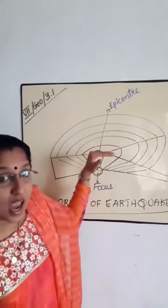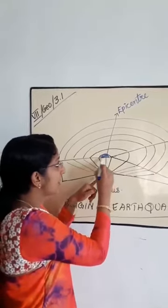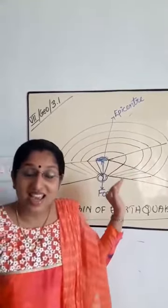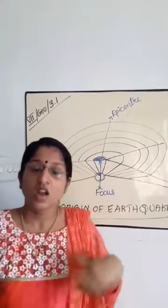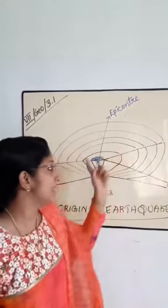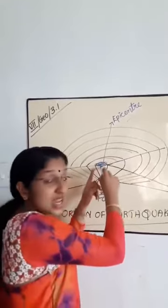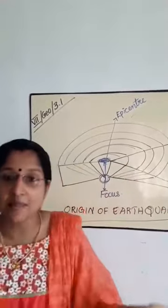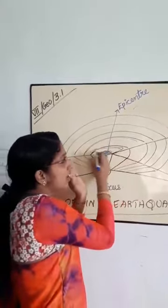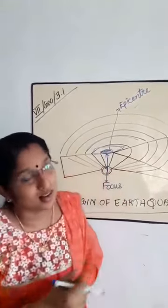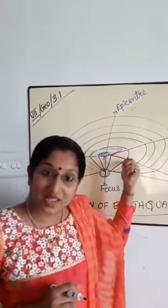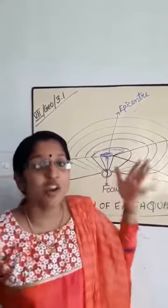The place on the surface above the focus is called the epicenter. Vibrations travel outwards from the epicenter as waves. The greatest damage is usually closest to the epicenter, and the strength of the earthquake decreases away from the epicenter.